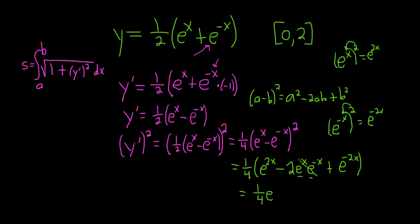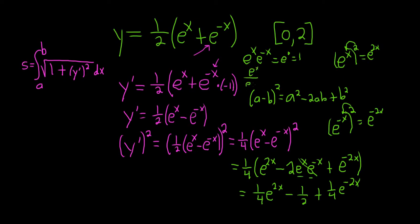Distributing: 1/4 times negative 2 gives negative 1/2. So y-prime squared is 1/4 e^{2x} minus 1/2 plus 1/4 e^{-2x}. The middle terms cancel because, method 1, x plus negative x equals 0 so e^0 equals 1; or method 2, you bring the second factor downstairs and get 1.